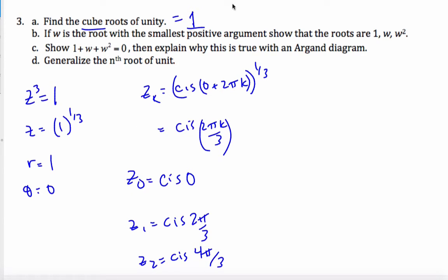B part now says, so this is A. B part now says, if w is the root with the smallest positive argument, show that the roots are 1, w, and w squared. Well, the smallest positive argument, that means it cannot be this one. This must be w. Z1 is w. And so I want to show the roots are 1, w, and w squared.